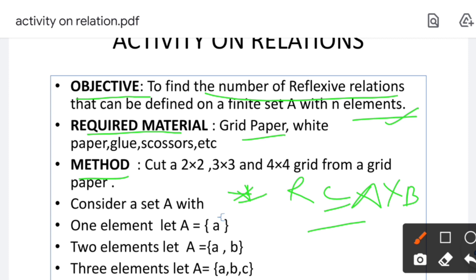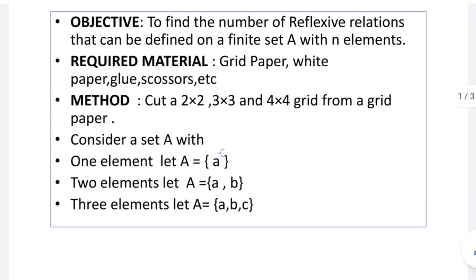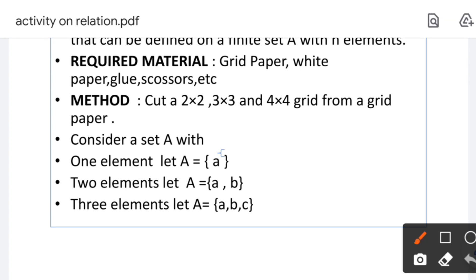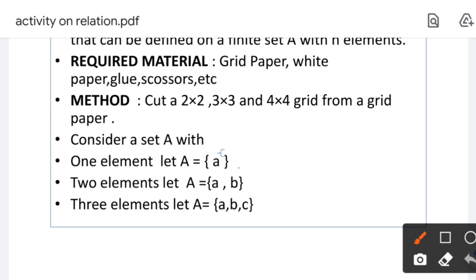For the method, I'll show you just now. I have made some grids — 2×2, 3×3 and 4×4. Then what I have done, I have taken a one-element set. When set A has only one element, then a two-element set and a three-element set — I have taken these cases.